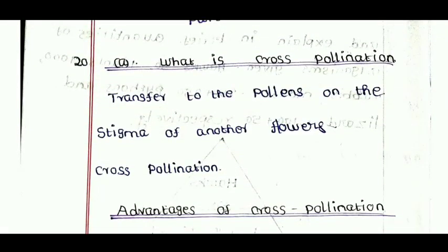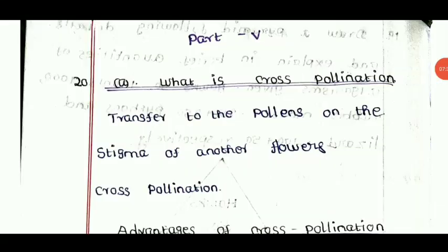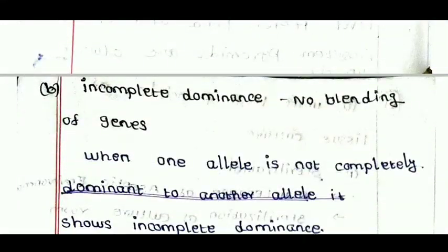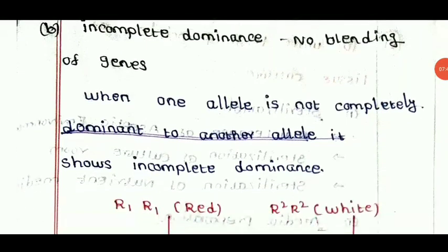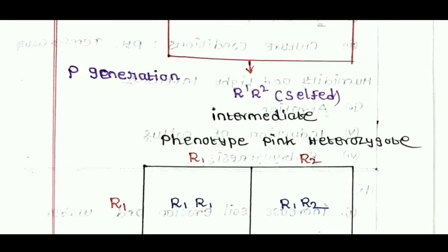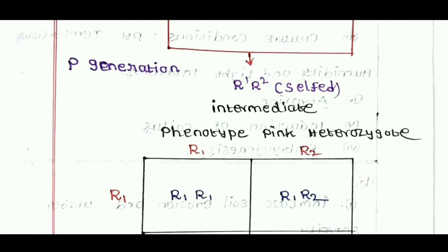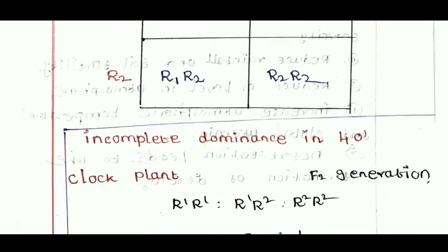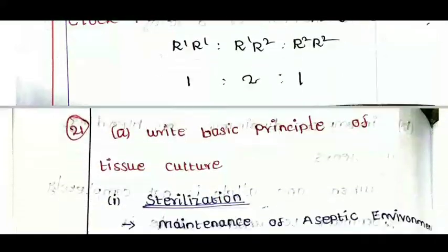Next is part 5. What is cross pollination? Cross pollination — definition and advantages. Incomplete dominance is the interior, with no blending changes. One allele is completely dominant and another allele is incomplete dominance. R1R1 is red, R2R2 is white, R1R2 is self colour — intermediate phenotype pink heterozygote. Checkerboard — incomplete dominance. R2 ratio is 1:2:1.